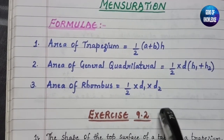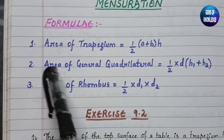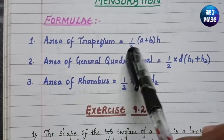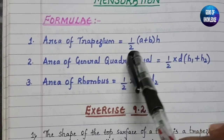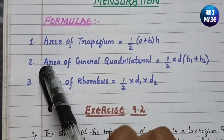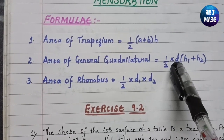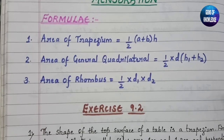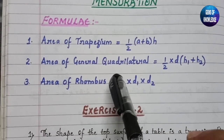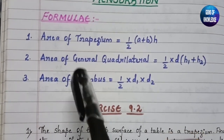Before starting this exercise, we need to study three formulas: area of trapezium, area of general quadrilateral, and area of rhombus. Area of trapezium = half into (a + b) into height, where a and b are the parallel sides and h is the height. Area of general quadrilateral = half into d into (h1 + h2), where d is the diagonal and h1, h2 are the two heights. Area of rhombus = half into d1 into d2, where d1 and d2 are the two diagonals.